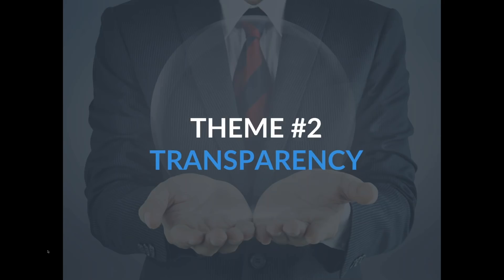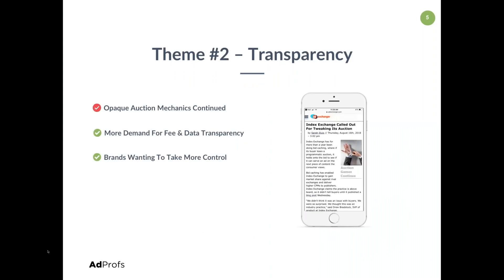In 2018, there was more scrutiny of auction mechanics, more demands for fee and data transparency, and ultimately more desire to take control. On the opaque auction mechanics front, the big story was around Index Exchange, which was called out for a practice called bid caching — where bids from advertisers in the header auction were cached and used in subsequent auctions. This is good for publisher yield, but the concern was around non-disclosure. The practice was undisclosed, and most of the industry felt it was an abuse of the auction or even borderline fraudulent.